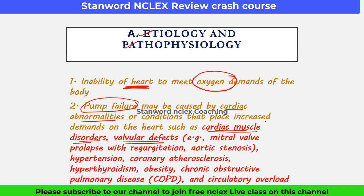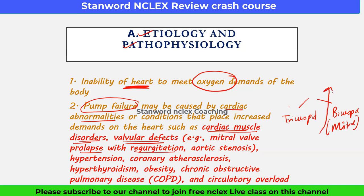In the heart there are two types of valves. On the right side there is the tricuspid valve, and on the left side there is the bicuspid valve, also known as the mitral valve. When there is a defect in the valve, this can lead to prolapse with regurgitation — that is, reversed blood flow. There may also be aortic stenosis; the aortic valve is on the left side, and if there is stenosis (narrowing), blood will not be able to move forward and will reverse back.